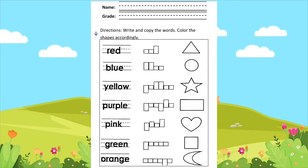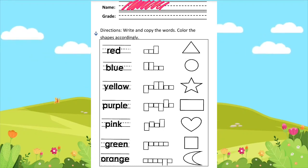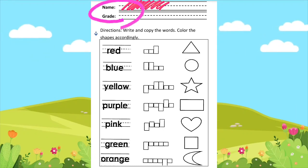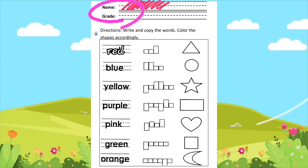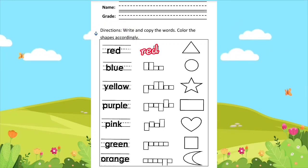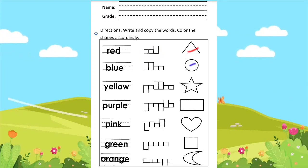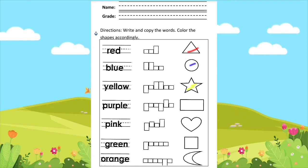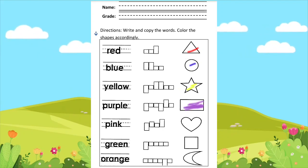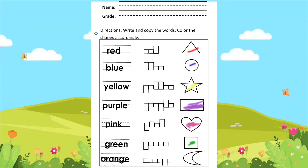Okay, children. This is your worksheet for today. First, you're going to write your name and also your grade level. Then write and copy the words inside the box and color the shapes accordingly. We have here red triangle, blue circle, yellow star, purple rectangle, pink heart, green square, and orange crescent moon.